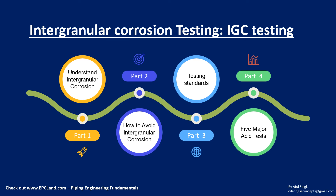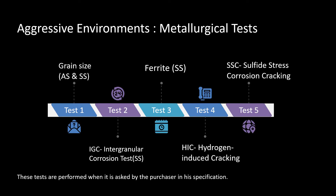In this section we covered intergranular corrosion testing — understanding the concept, how to avoid this type of corrosion, the relevant ASTM standards, and the five acid tests available to identify intergranular corrosion. This was part of the metallurgical tests for aggressive environments series. Thank you for watching.